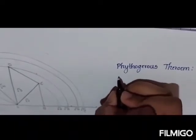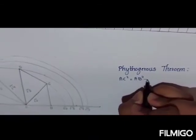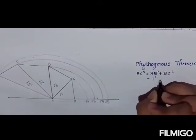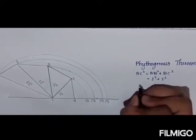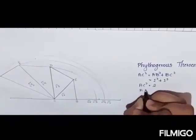First, AC² equals AB² plus BC², which equals 1² plus 1². AC² equals 2, where AC equals root 2.